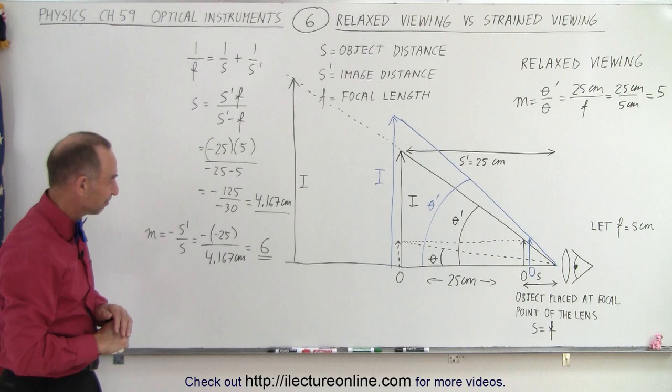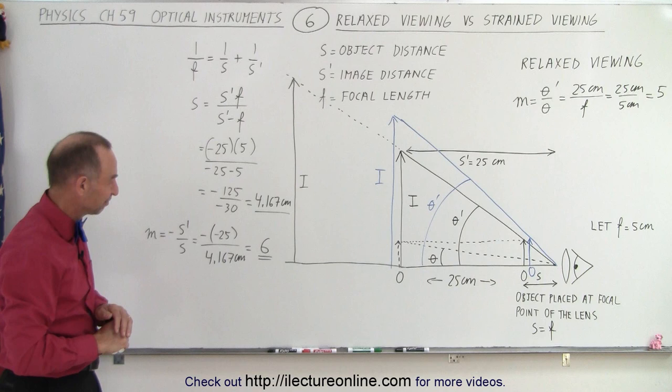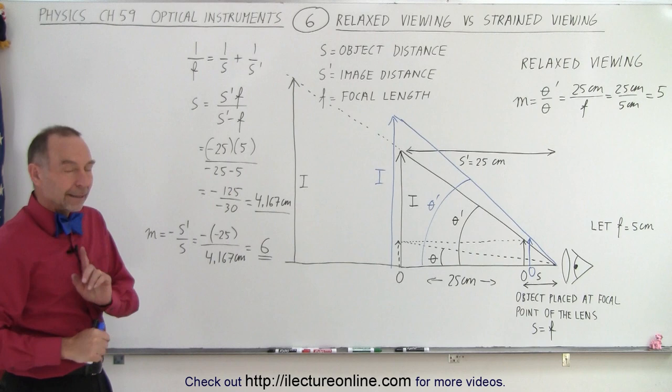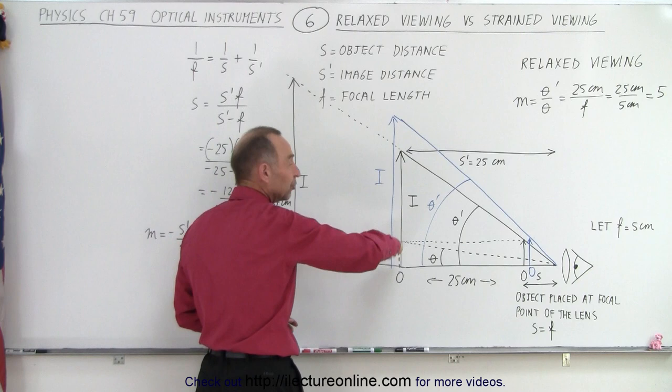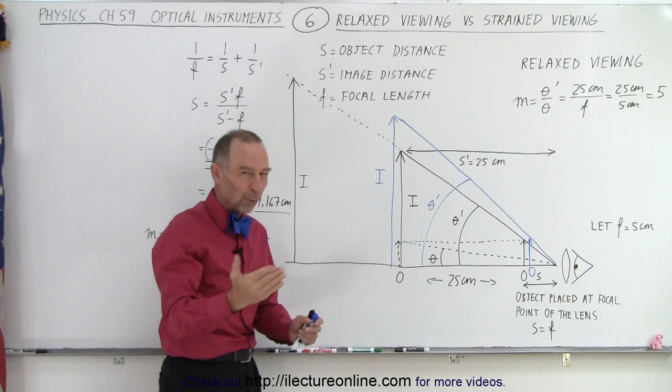Why is it that you use S prime over S there and theta prime over theta for magnification? Good question. So the reason why we used theta prime over theta before is because that way we allow the image to be anywhere we want. We can place it here, or we can put it farther away. And that ratio doesn't change, that angle doesn't change. So it's essentially this angle divided by this angle, no matter where you place the image.